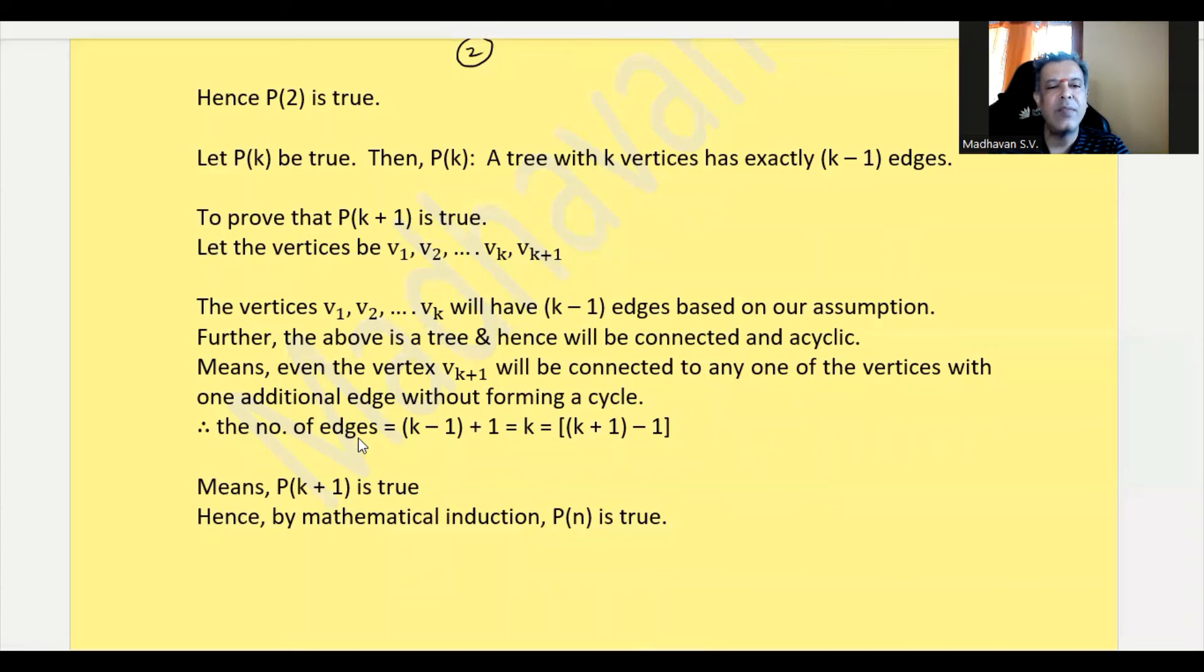That means the number of edges in this tree, that is P of k plus 1 tree, will become k minus 1, which is this, plus this additional one edge, which is added, it becomes k. And that k can be written as k plus 1 minus 1. That means P of k plus 1 is also true.